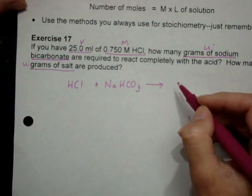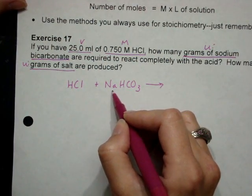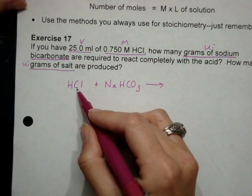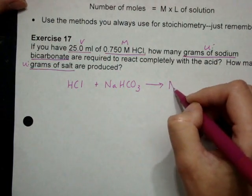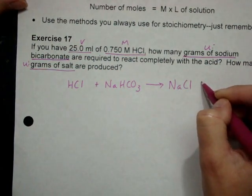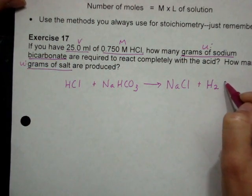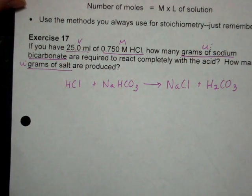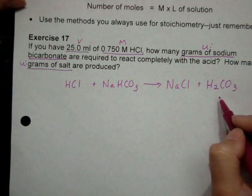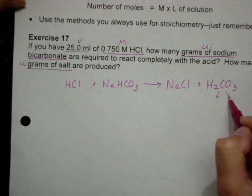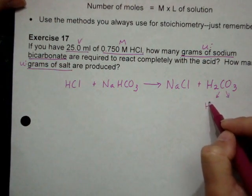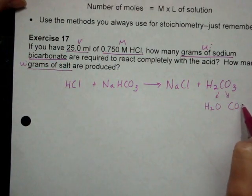React with the acid, so the salt that's produced, this is a double replacement reaction, Na and Cl. And then I also have carbonic acid, H2CO3, which hopefully you recognize that that will actually split and become H2O and CO2.